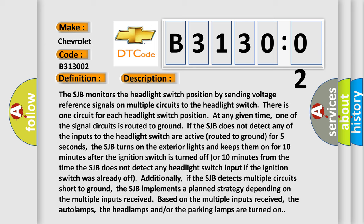Additionally, if the SJB detects multiple circuits short to ground, the SJB implements a planned strategy depending on the multiple inputs received. Based on the multiple inputs received, the auto lamps, the headlamps and/or the parking lamps are turned on.